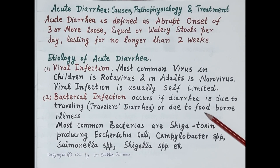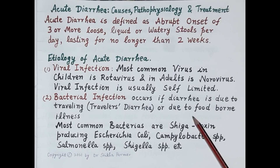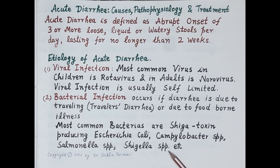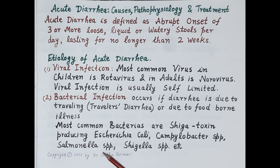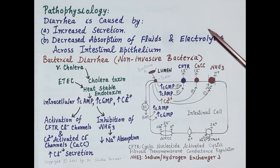Bacterial infection occurs if diarrhea is due to traveling — that is, traveler's diarrhea — or due to foodborne illness, which is illness caused by ingestion of food contaminated with viruses, bacteria, or their toxins. The most common bacteria are sugar-toxin-producing E. coli, Campylobacter species, Salmonella species, and Shigella species. So acute diarrhea is an infectious diarrhea caused by viral or bacterial infections.